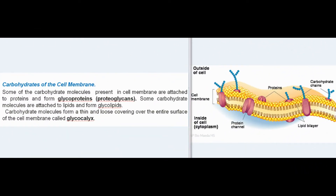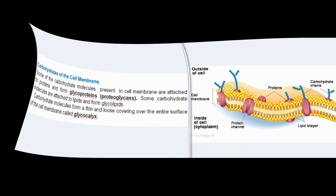Some carbohydrate molecules present in the cell membrane are attached to proteins forming glycoproteins and proteoglycans, while others are attached to lipids forming glycolipids. Carbohydrate molecules also form a thin and loose covering over the entire surface of the cell membrane called glycocalyx.